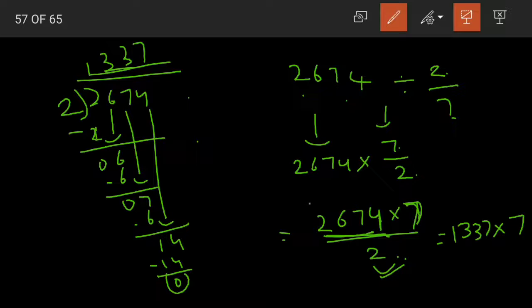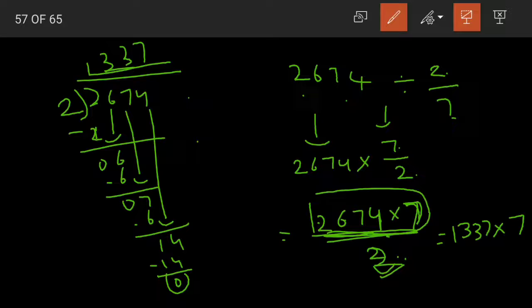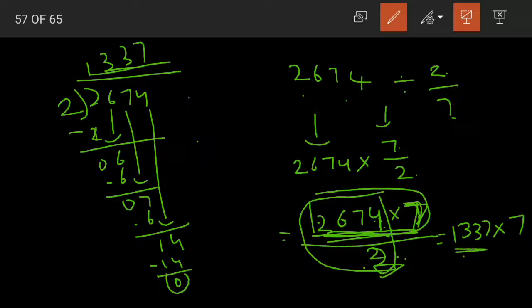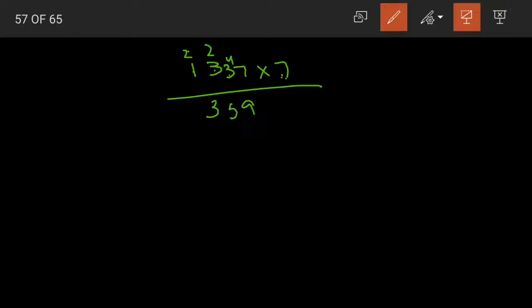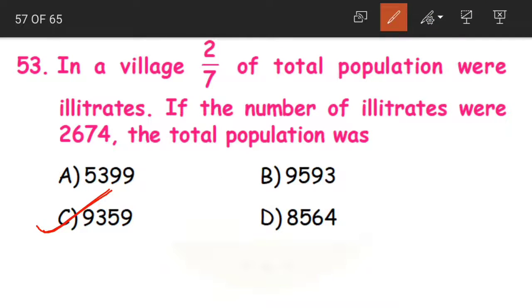Now multiply 1,337 by 7. 7 sevens are 49; 7 threes are 21 plus 4 is 25; 7 threes are 21 plus 2 is 23; 7 ones are 7 plus 2 is 9. So 9,359 is our answer — that is option C. The total population of the village was 9,359.